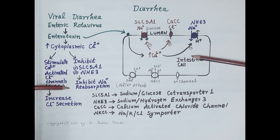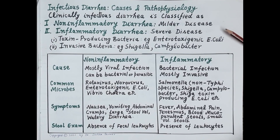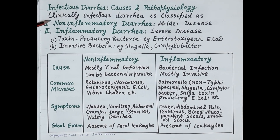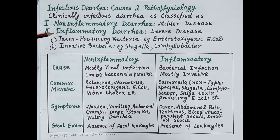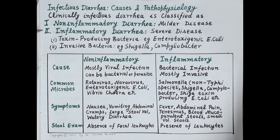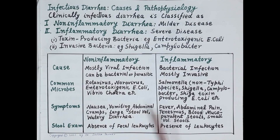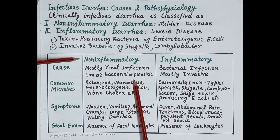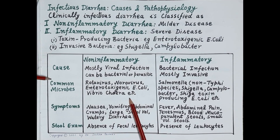So there is increased chloride secretion and inhibition of sodium absorption, resulting in diarrhea. Now we have understood that acute diarrhea is mostly caused by infections. Clinically, infectious diarrhea is classified as non-inflammatory diarrhea — which is mild — and inflammatory diarrhea, which is severe. There are two types of bacteria: toxin-producing bacteria like enterotoxigenic E. coli, and invasive bacteria like Shigella and Campylobacter.